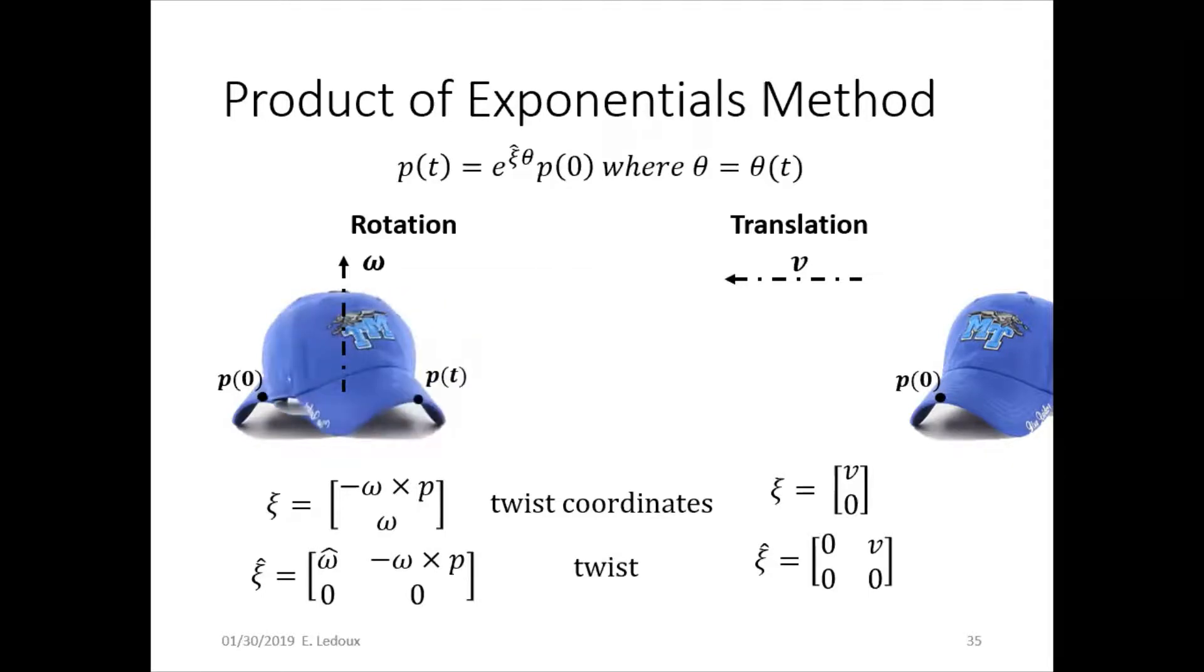So for rotation, it's negative omega cross p and omega. And then for translation, it is just the linear velocity and then zero because there is no rotation.